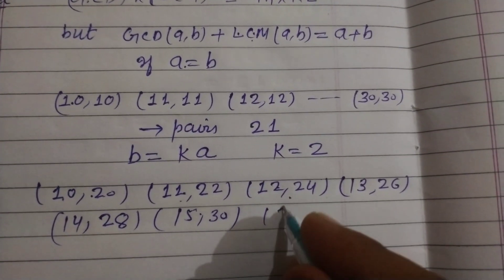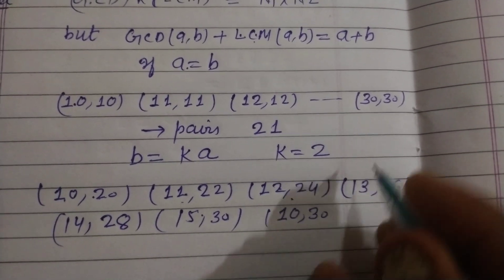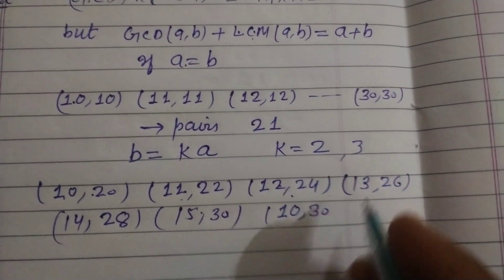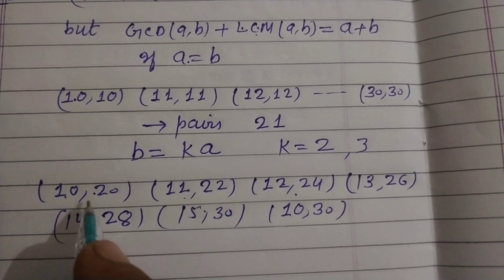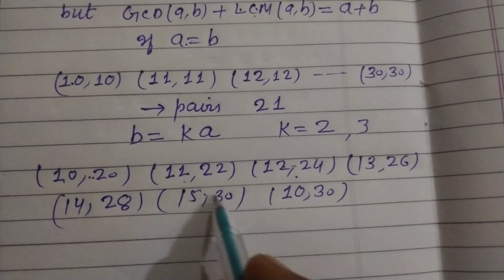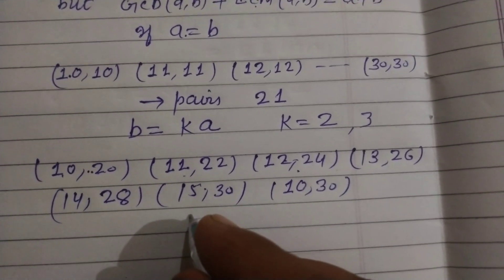Here we also take (10, 30), where k equals 3, and no other pairs follow this rule. So there are 7 pairs total.